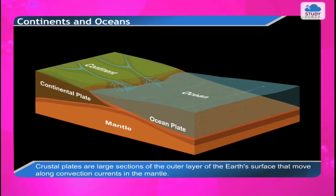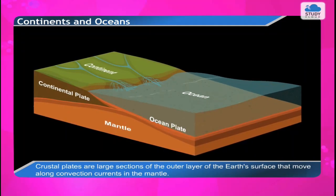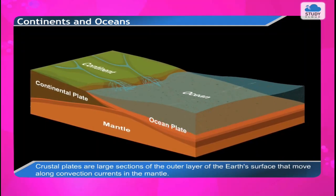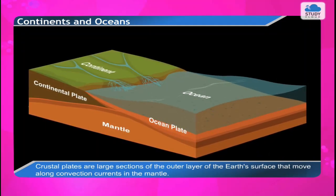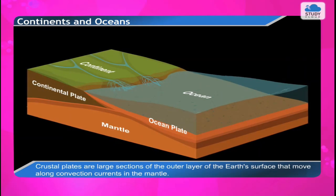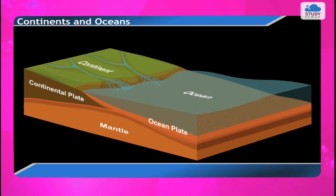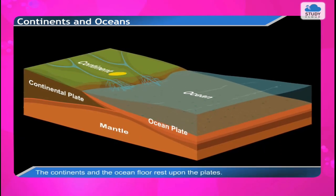Crustal plates are large sections of the outer layer of the earth's surface that move along convection currents in the mantle. The continents and the ocean floor rest upon these plates.